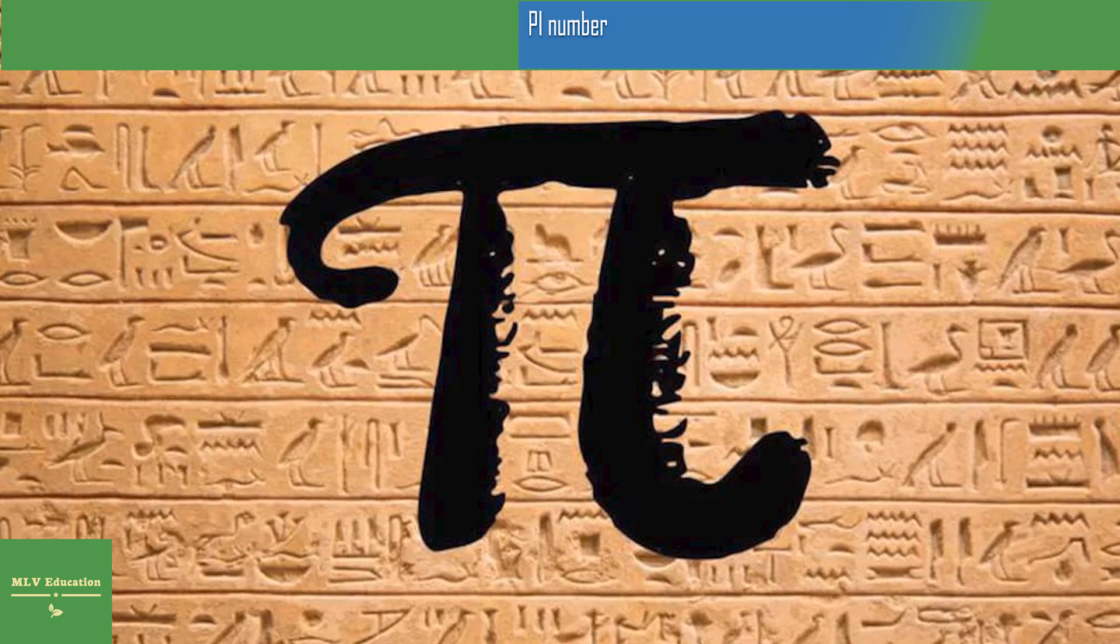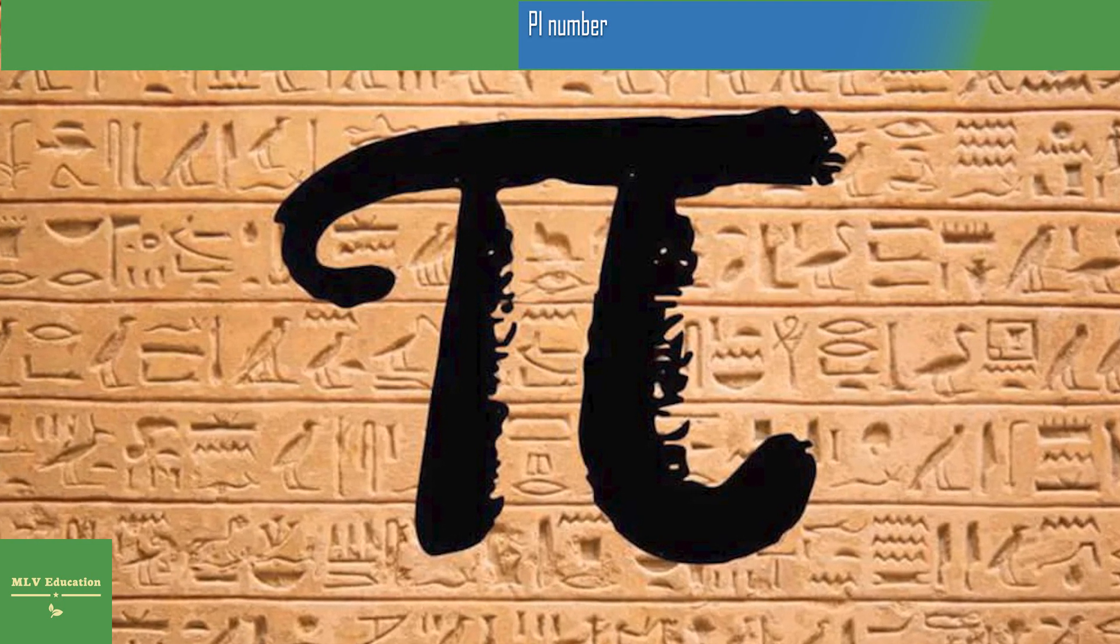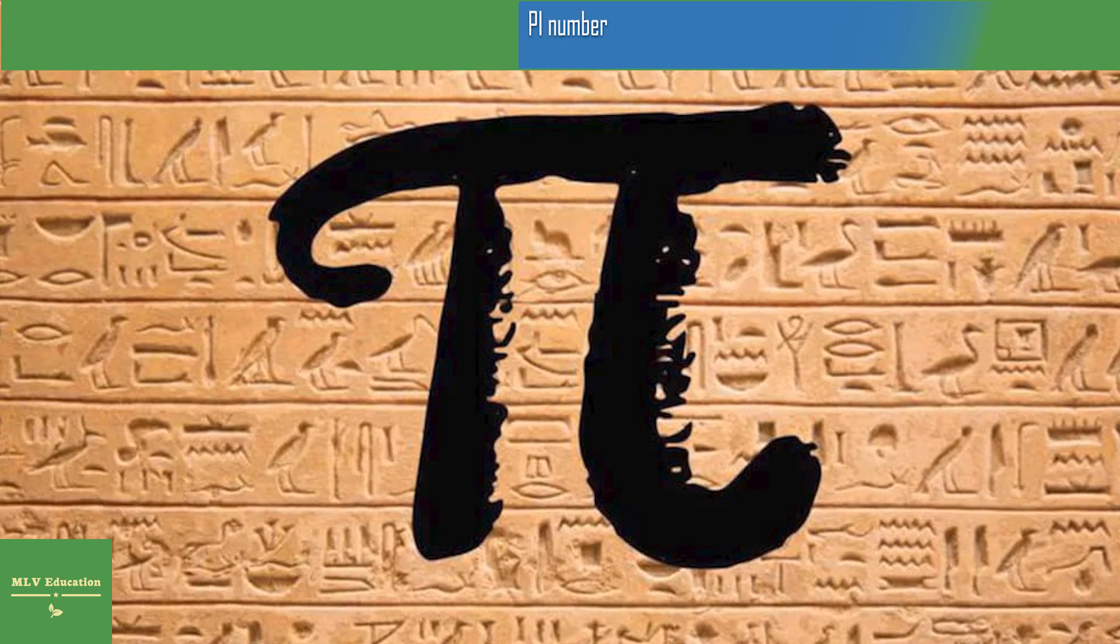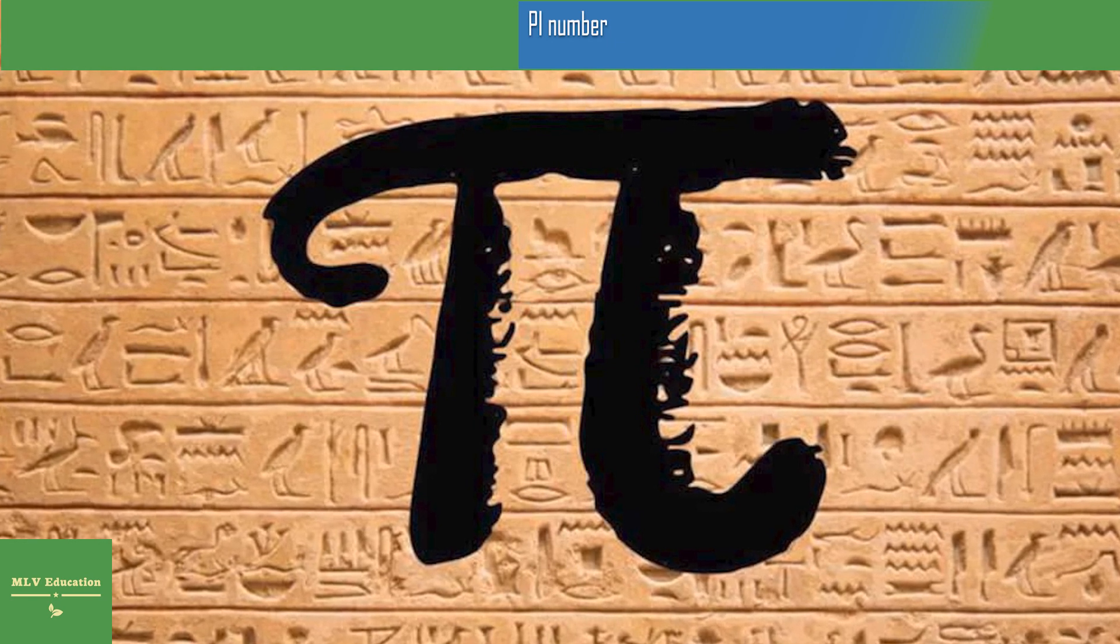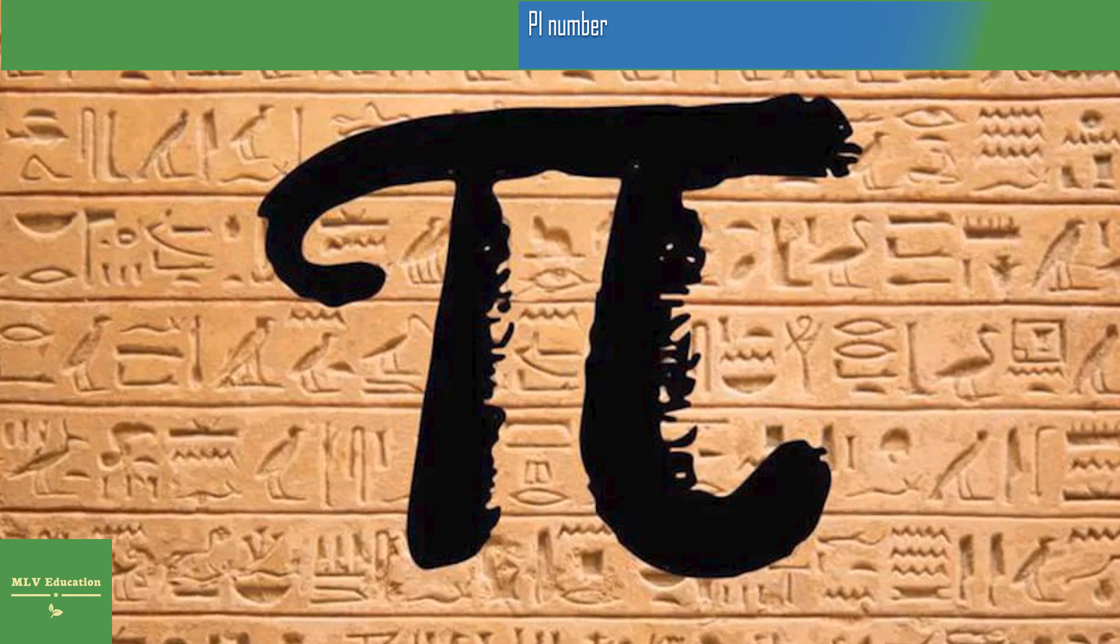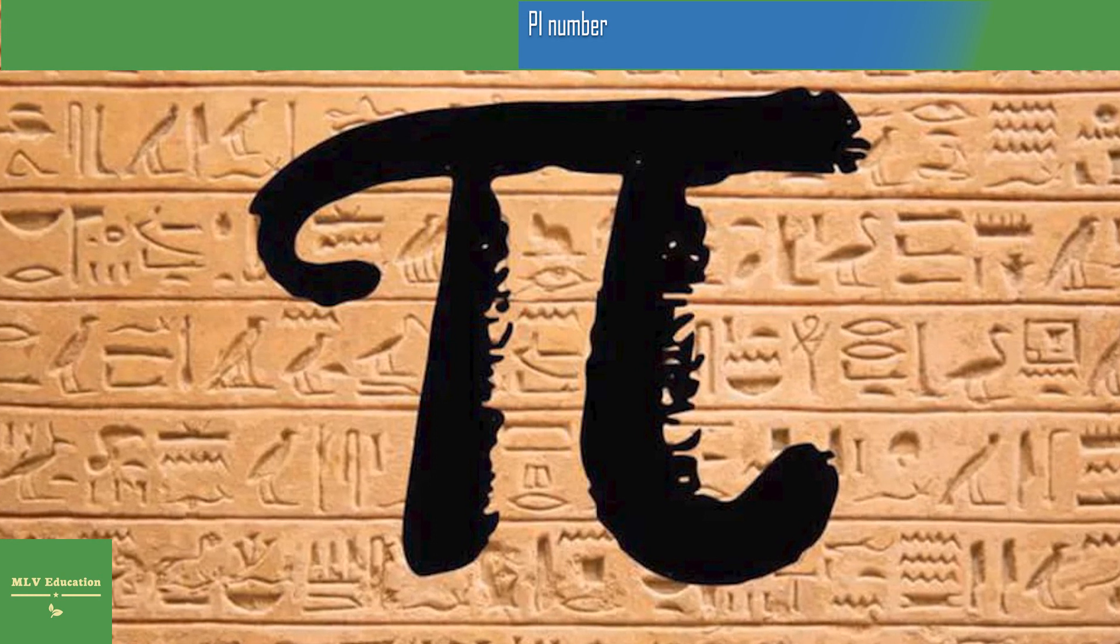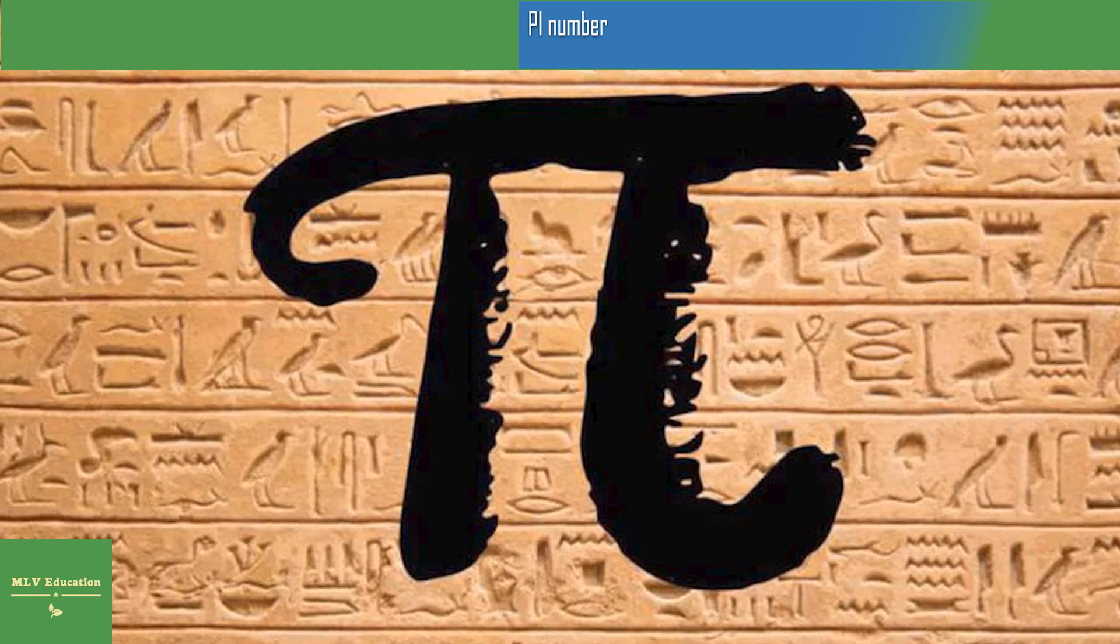Carl Sagan, American astrophysicist and initiator of the SETI program in search of extraterrestrial intelligence, in his novel Contact, which was also screened, suggests that the number Pi contains a coded message from divinity. Others have calculated that the sum of the first 144 decimals is 666.